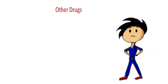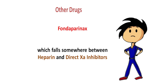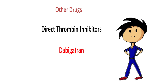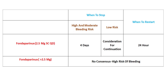There are other drugs such as direct factor Xa inhibitors like rivaroxaban and apixaban. Fondaparinux falls somewhere between heparin and direct Xa inhibitors, and there are direct thrombin inhibitors such as dabigatran. These drugs are relatively new and there is a lack of consensus regarding protocols. However, according to some guidelines, for patients on fondaparinux 2.5 mg subcutaneous daily, the drug should be discontinued 4 days before high and intermediate bleeding risk surgeries. For low risk surgeries, there should be a shared assessment considering whether to continue the drug. Patients on therapeutic doses of fondaparinux — 5–10 mg — have a high risk of bleeding, but there is insufficient data for a definitive guideline.